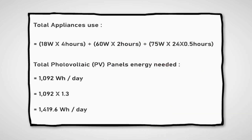To determine the power consumption demands, you will be able to estimate the amount of energy to be supplied by the solar PV system. Calculate the total watt-hours per day for each appliance used, and then calculate the total watt-hours per day needed from the PV modules. After determining the total watt-hours per day, multiply it by 1.3 for energy lost in the system.